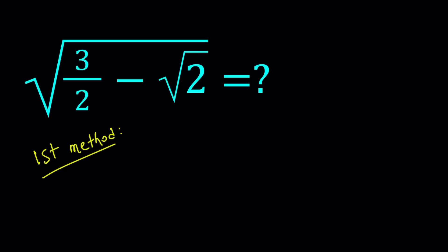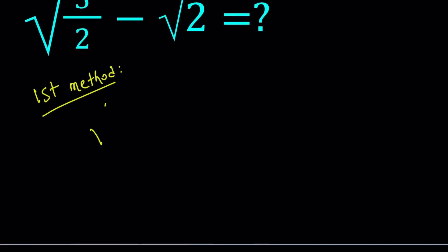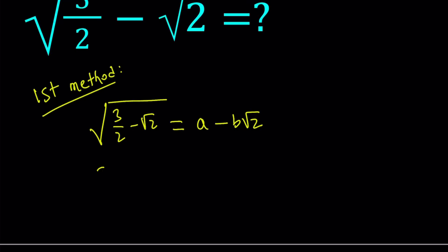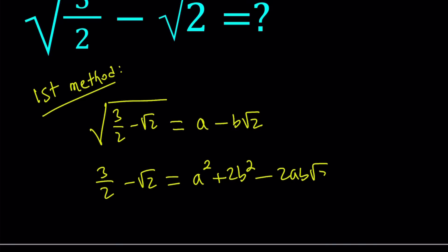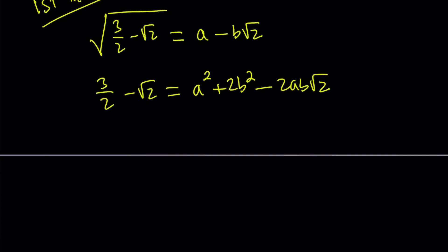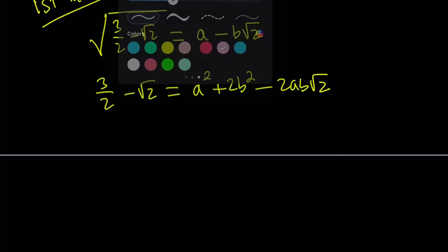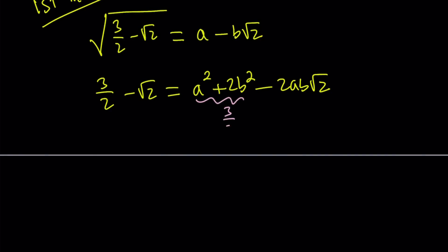For the first method, I'm going to set this expression equal to a minus b root 2, where a and b are rational numbers. So, square both sides. On the right-hand side, we get a squared plus 2b squared minus 2ab root 2, if you expand the quantity x minus y squared. Comparing the right-hand side and the left-hand side, we can say that a squared plus 2b squared needs to equal 3 halves, and 2ab needs to equal 1.